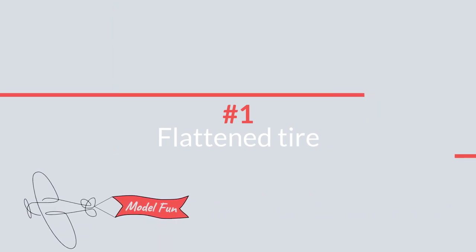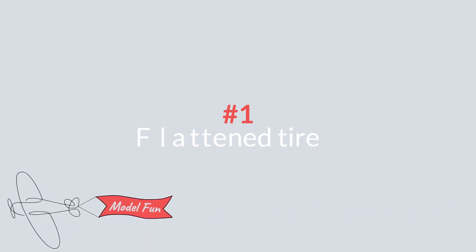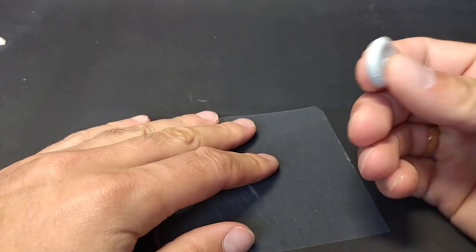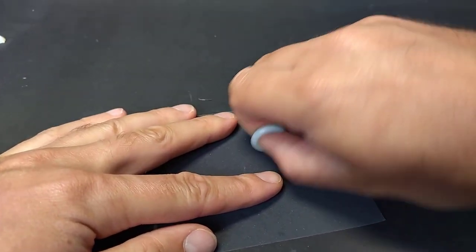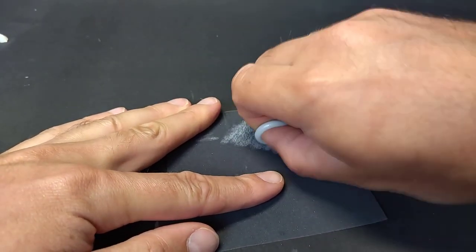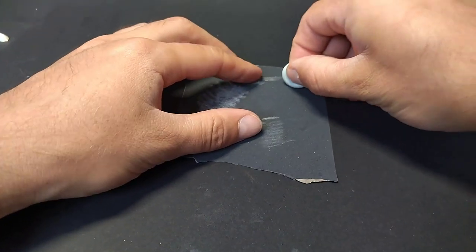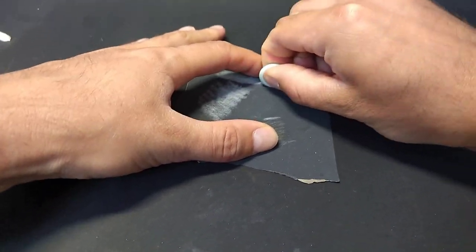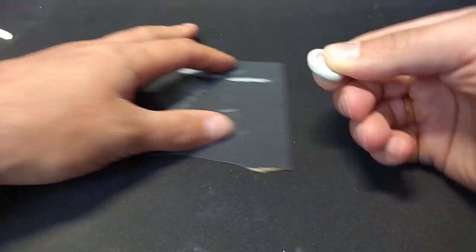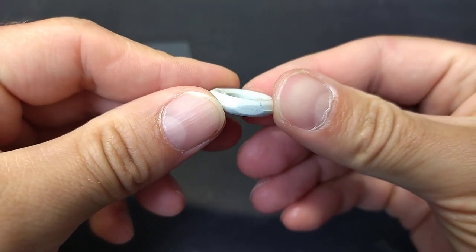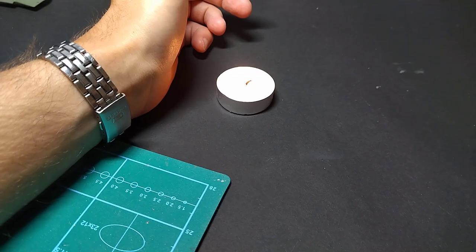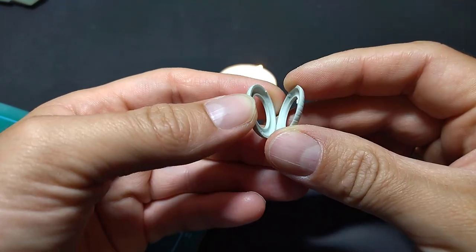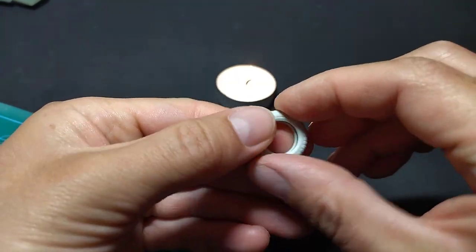When you build WWII aircraft, consider flattening wheels, especially for aircraft that operated on grass airfields. This can be done by sanding down part of the wheel that has contact with the ground, like you can see here. Because this is simple, I will not talk about it. A more realistic effect can be achieved by using heat.